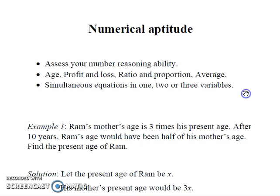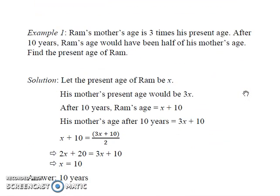So let's dive in and do the first example. Ram's mother's age is three times his present age. After 10 years his age will be half of his mother's age. We need to find the present age of Ram.